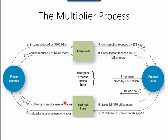These two actions — reducing employment and cutting wages — directly affected the factor market, which is where all of us will participate after graduation by offering our labor. Workers were no longer able to earn as much in wages, and many laborers could not find jobs at all, increasing the unemployment rate.